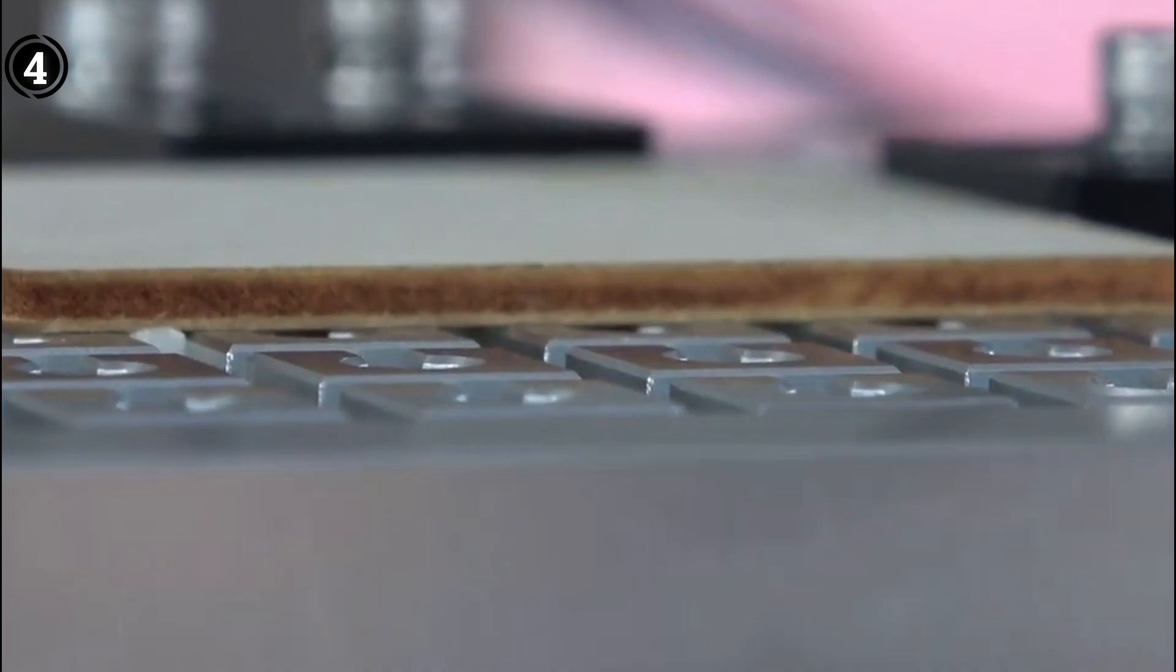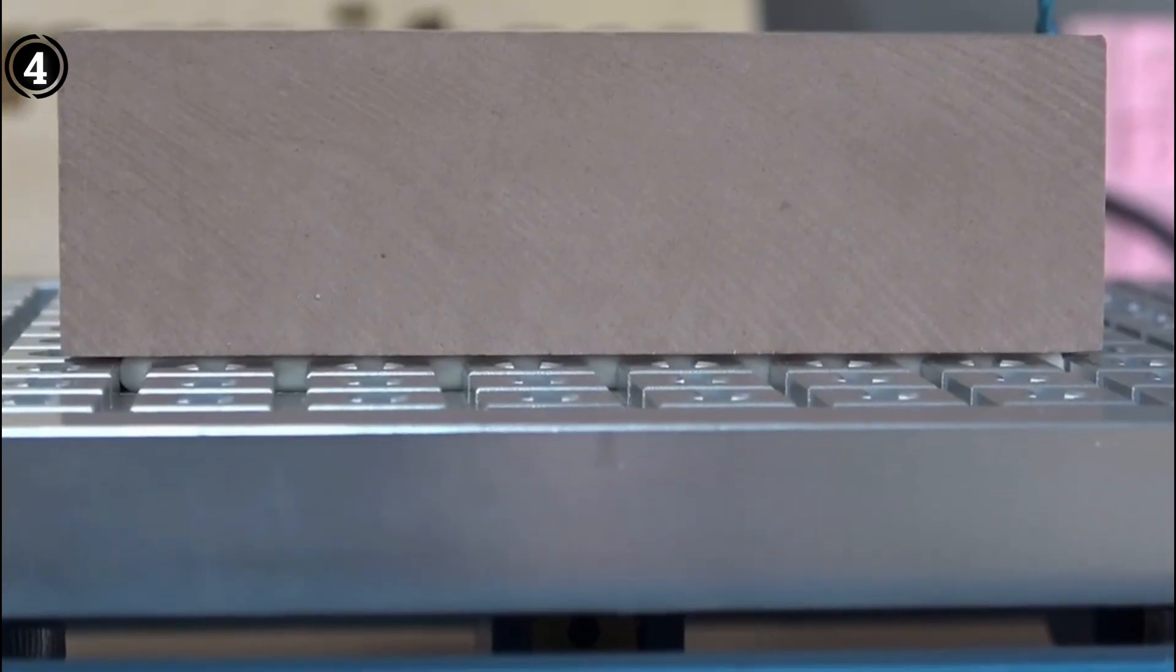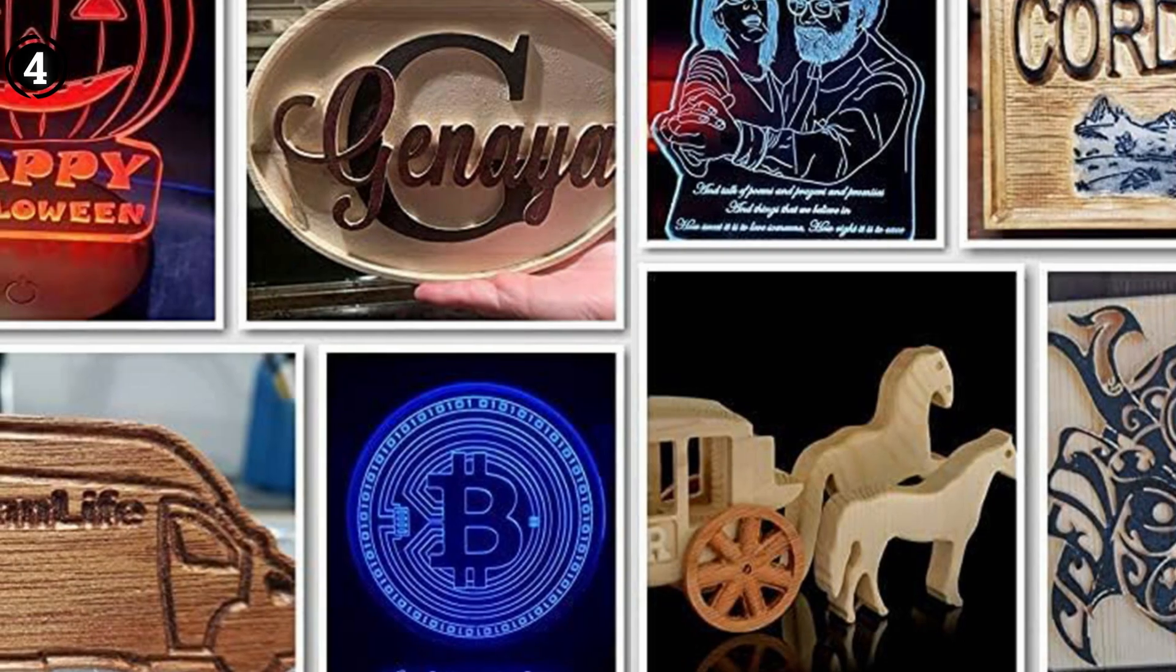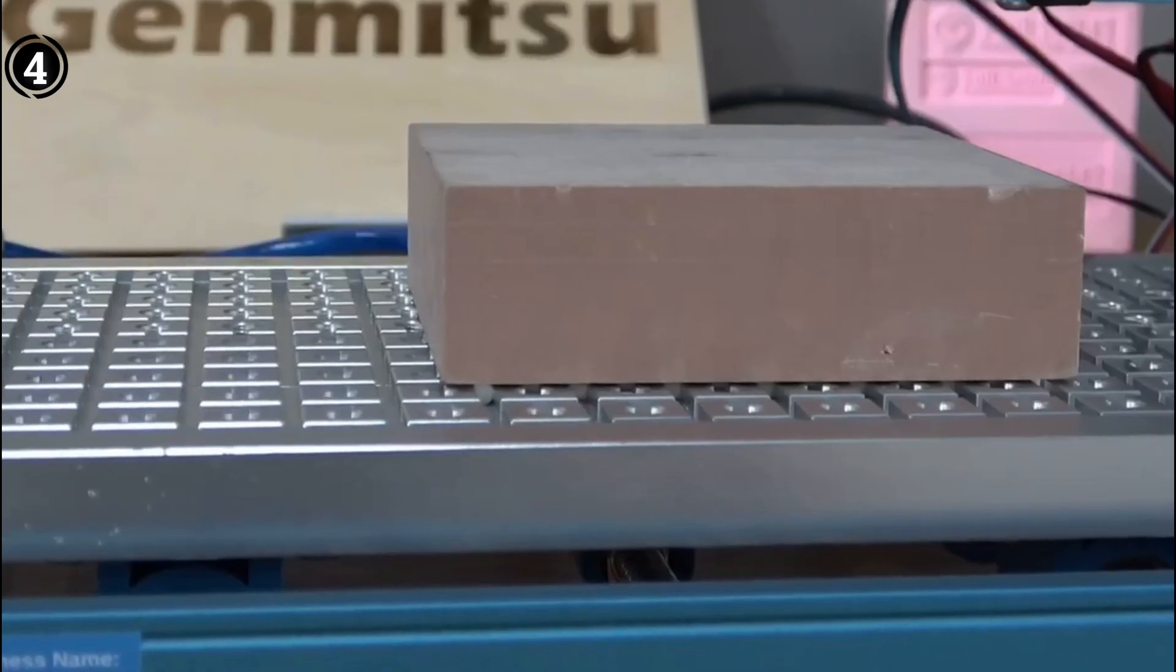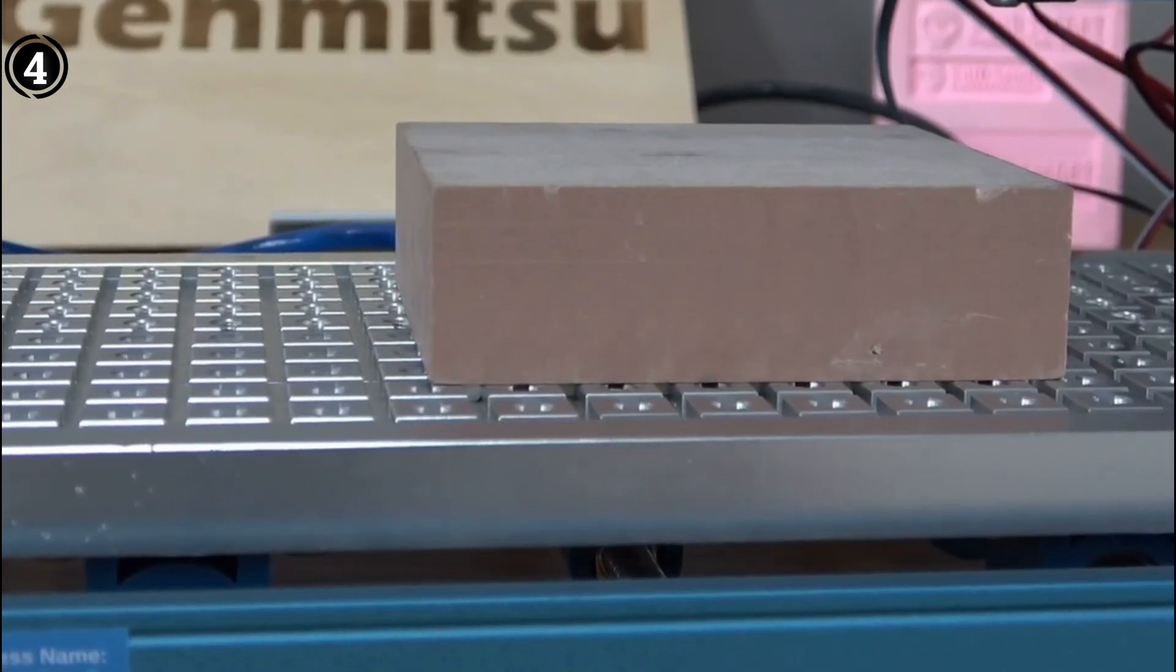The all-aluminum body of the 3018 Prover offers stability that is essential for milling a wide range of materials. Additionally, the acrylic safety baffles help contain dust and provide a safety barrier, making cleanup easier.